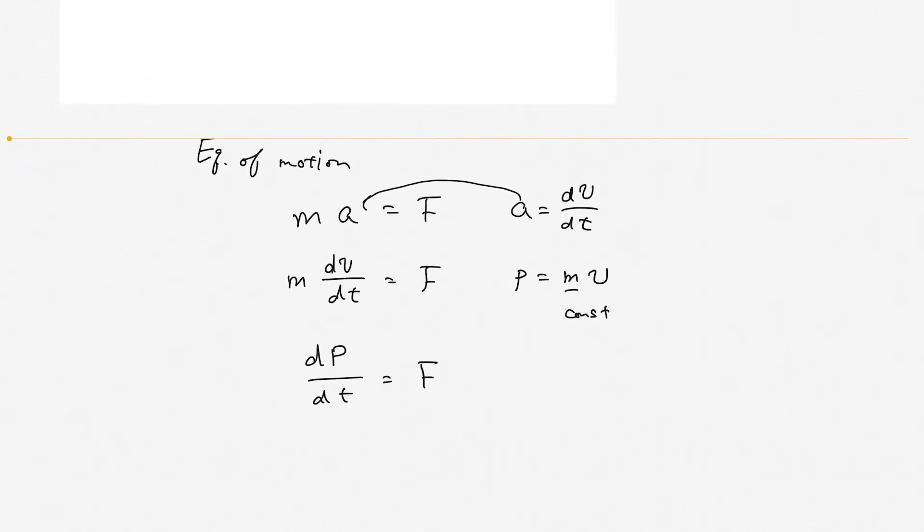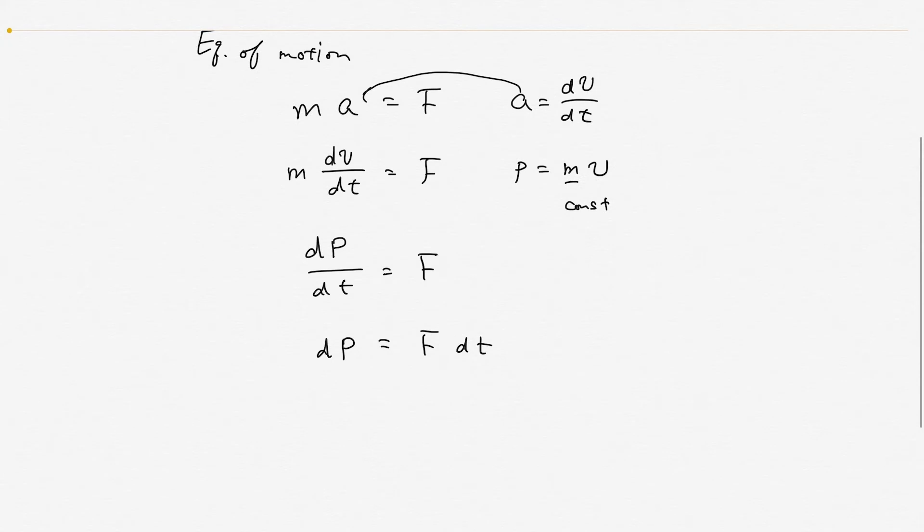If you multiply dt on both sides, this is dp equal F dt. If you change the d to the delta, delta p is change of the momentum, equal to F times delta t.